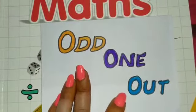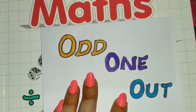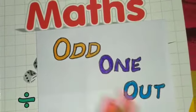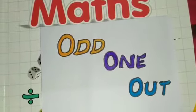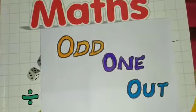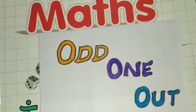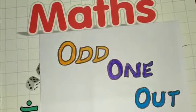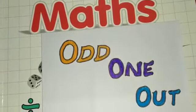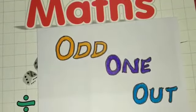Odd one out means — jo bhi cheez kuch different hai, wo hamay pahchan ke nikalna hai. Right? Odd one out — different cheez ko, different things ko, hamay out karna hai, baahar nikalna hai.